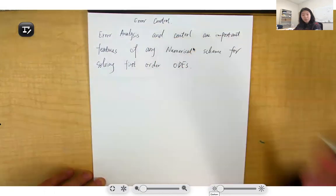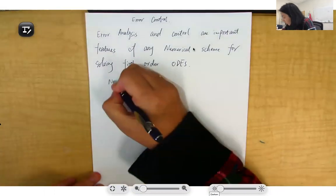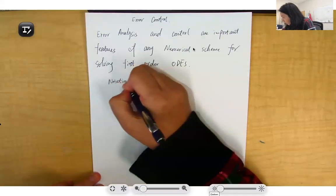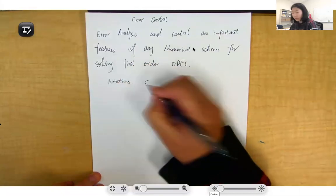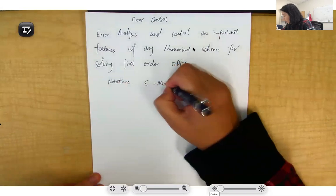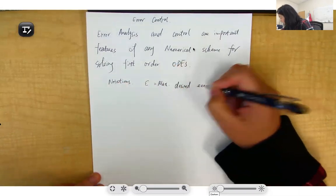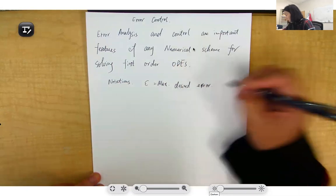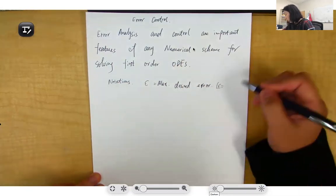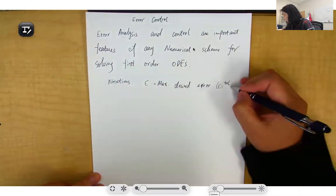For notations, we have epsilon (ε), which is the maximum desired error. Usually epsilon equals the tolerance you defined in your program divided by 10.